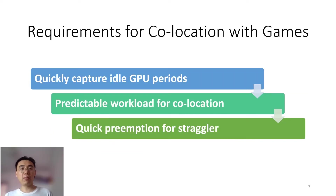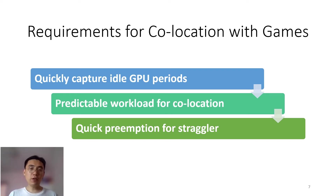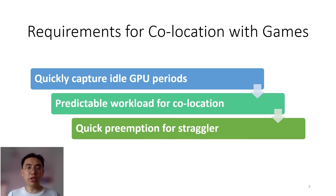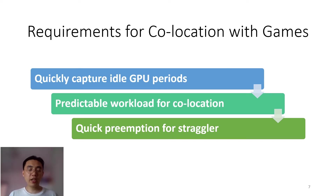The lesson we learned presents three requirements for co-location with games. First, we need to quickly capture the idle GPU periods in order to harvest them. Second, we need a more predictable workload so that we can control its submission to avoid conflict with games. Third, we need a secure solution that can quickly preempt the straggler workload once our prediction is wrong.